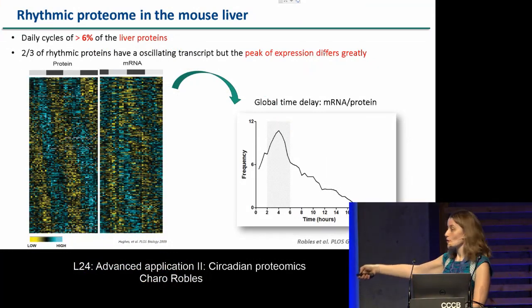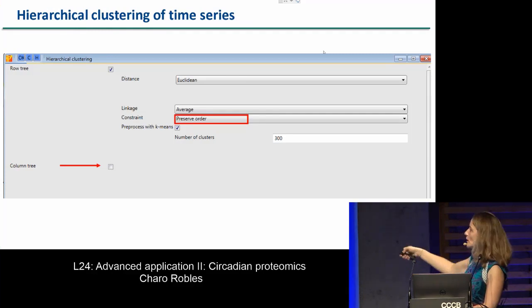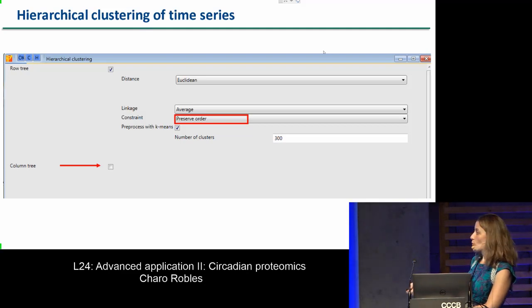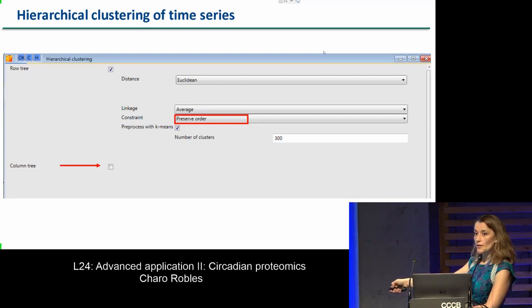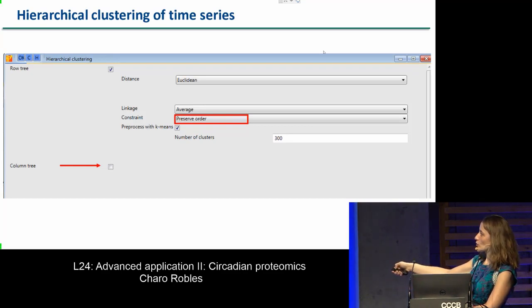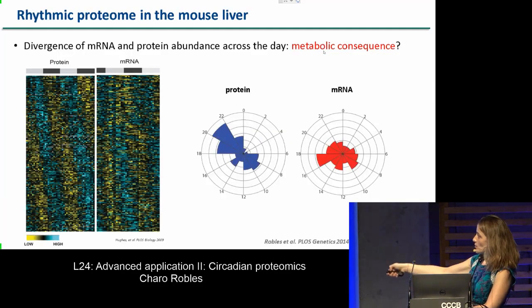To make this heat map in Perseus, you go to the hierarchical clustering button. The important thing is that you don't want to cluster the columns, because Perseus internally keeps the phase order from the cycling analysis. In the row tree, click 'preserve order' — preserve the order of the phase. You unclick the column tree and add 'preserve order,' and you get these nice heat maps organized by phase.